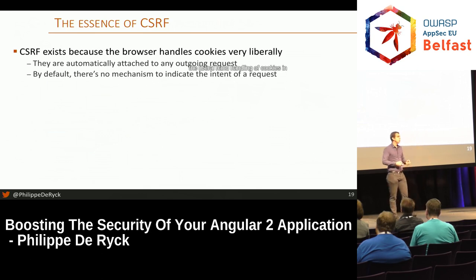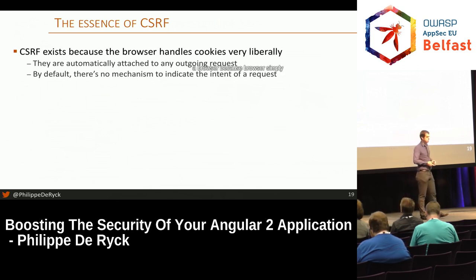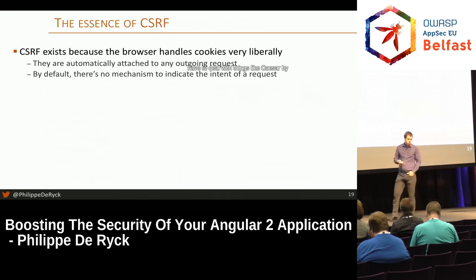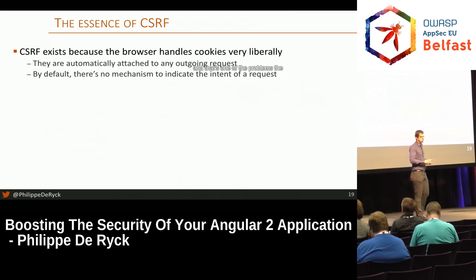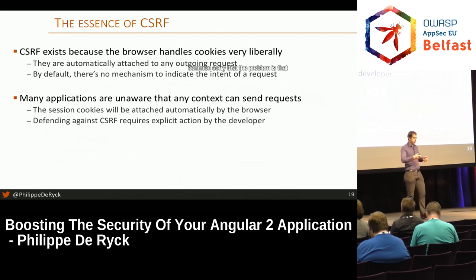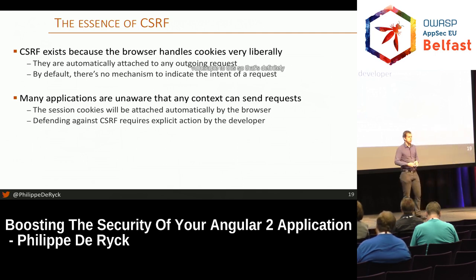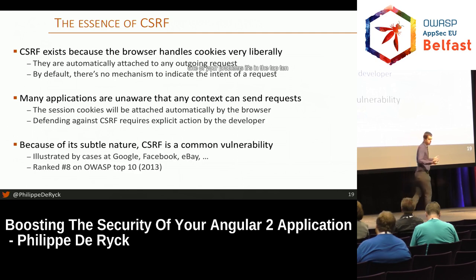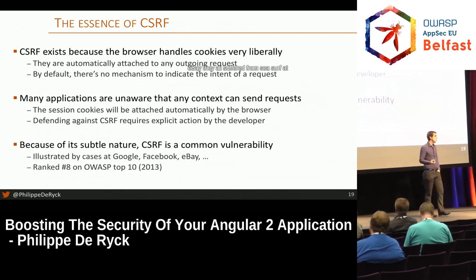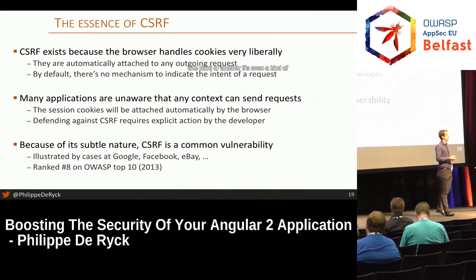The reason for CSRF is the liberal handling of cookies in the browser — the browser simply attaches cookies to any request. There's no way by default to indicate whether something is intentional or not. If you don't know about CSRF, you won't have implemented a defense, and you'll probably be vulnerable. Major companies like Google, Facebook, and eBay have all suffered from CSRF at one point.